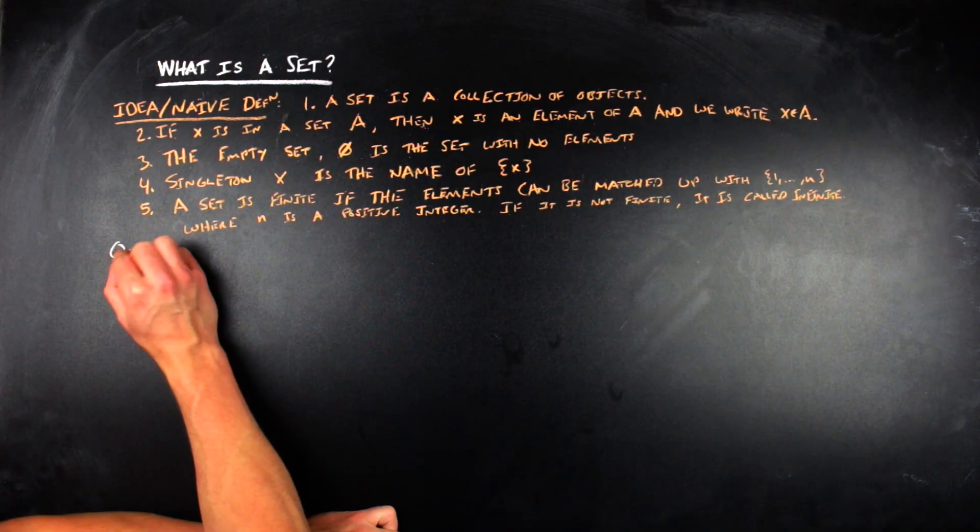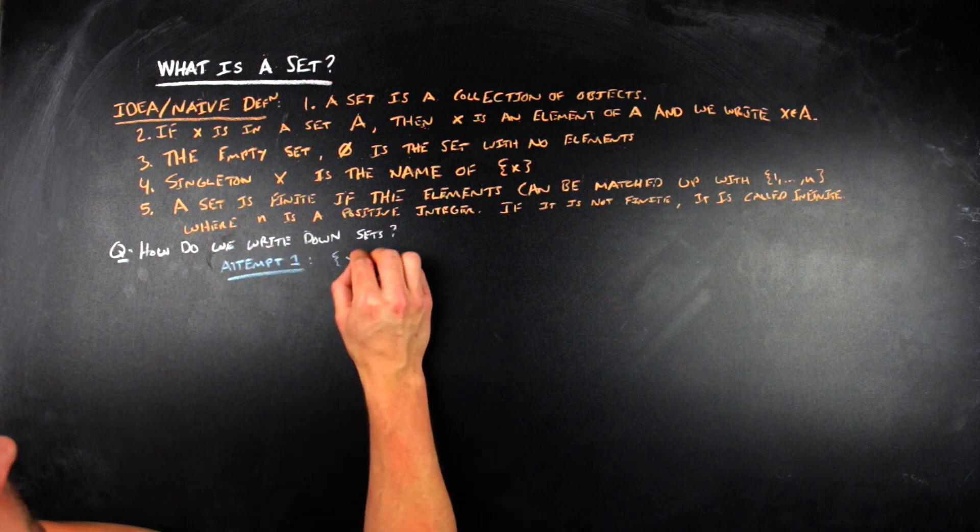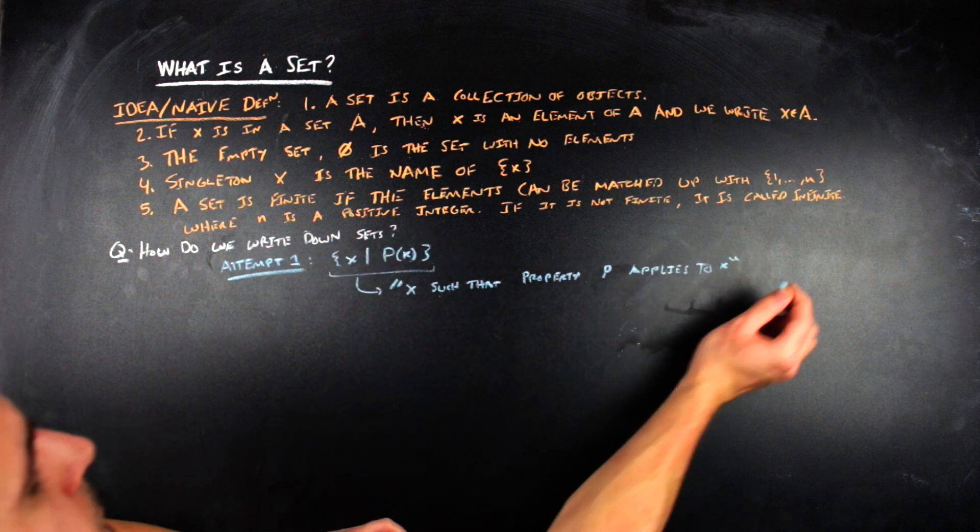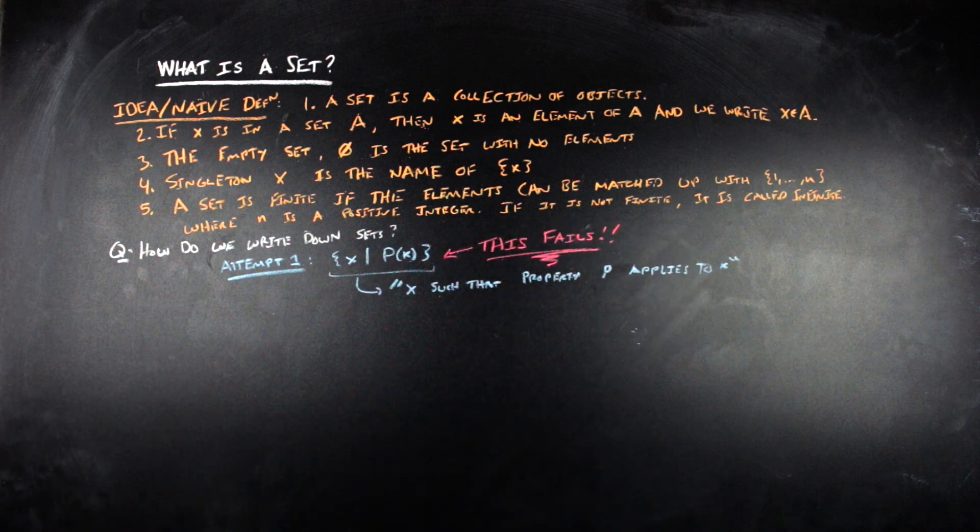So, we have this naive notion of what a set is, and what sets look like in a naive way, but you probably want to start writing some things down and being able to work with these things and making your own examples. To do that, you might go ahead and say, well, I just want all of the things that satisfy a particular property. And that isn't the way to go. That fails.